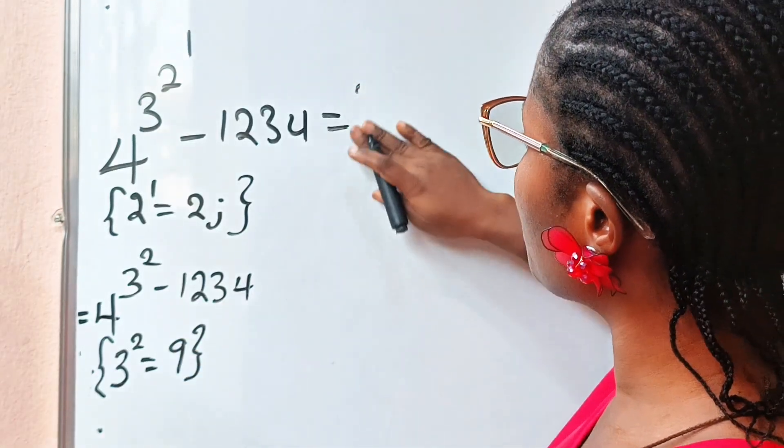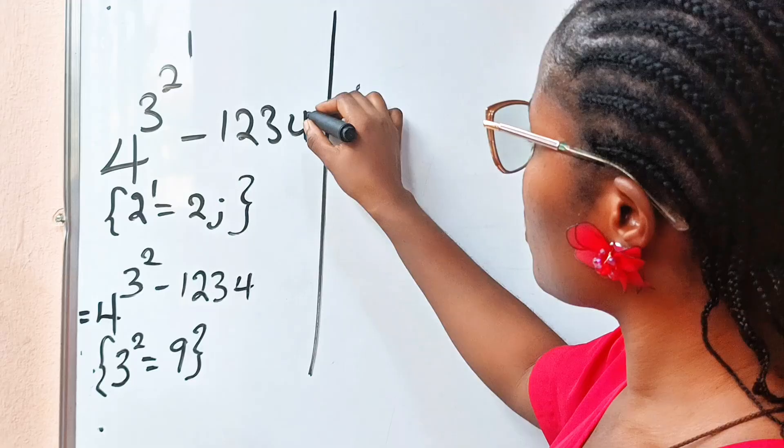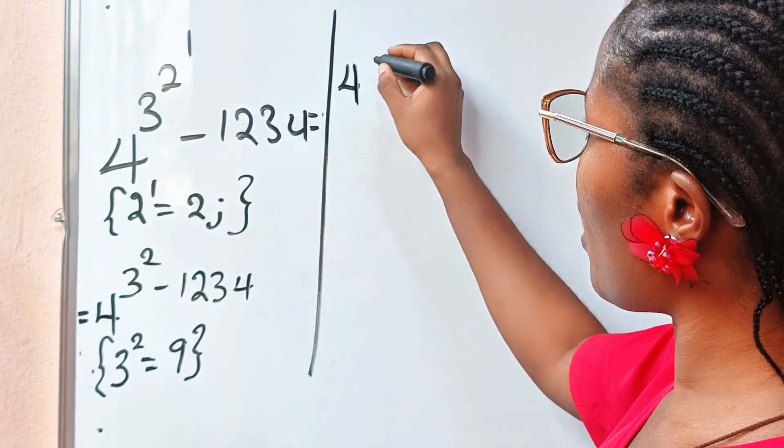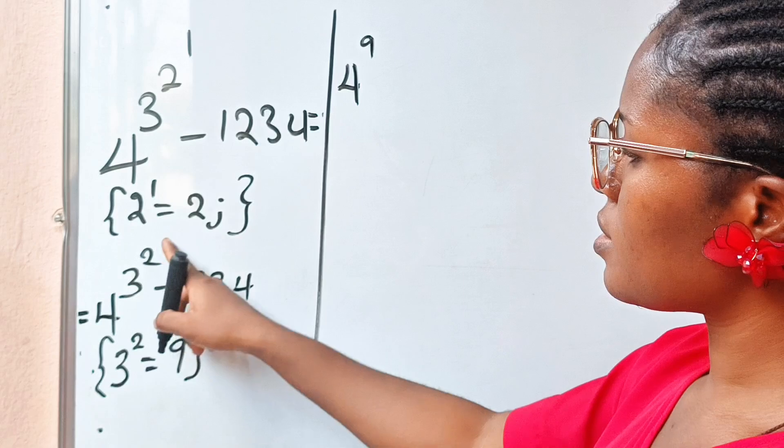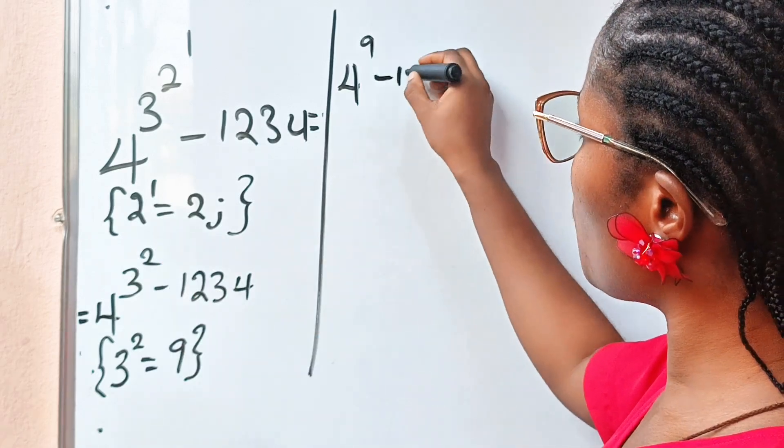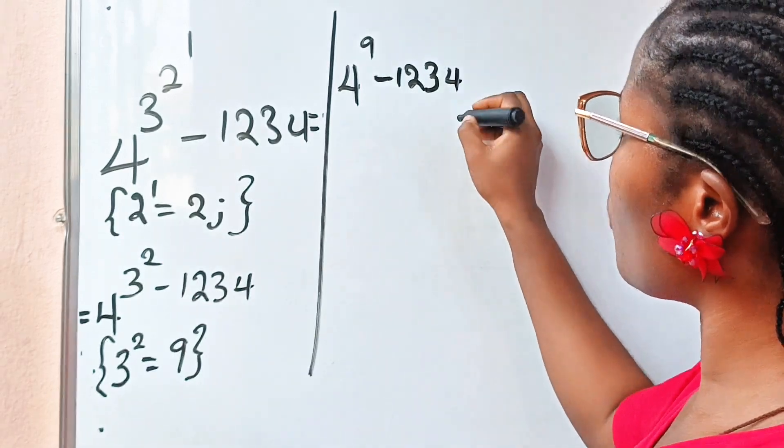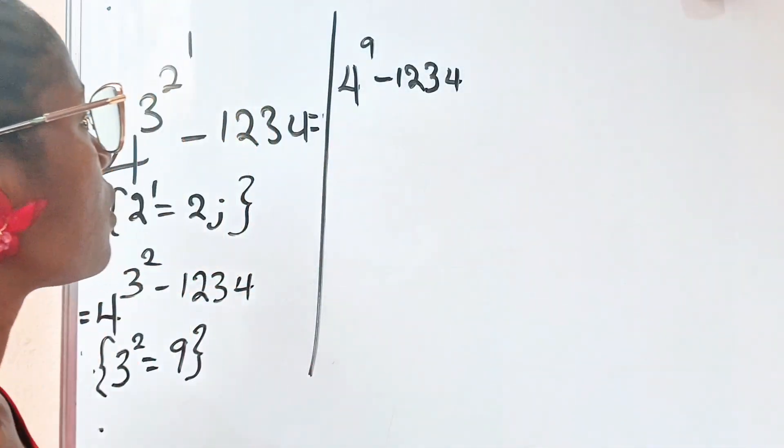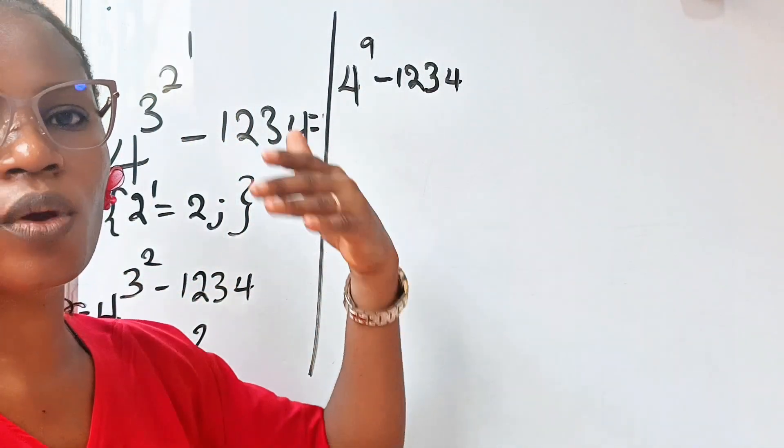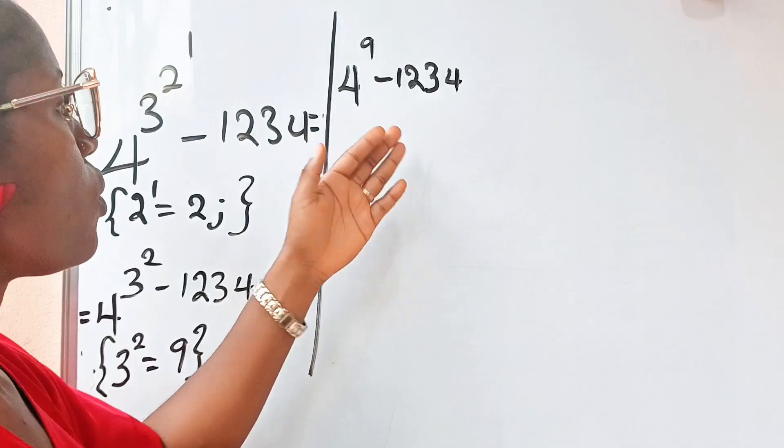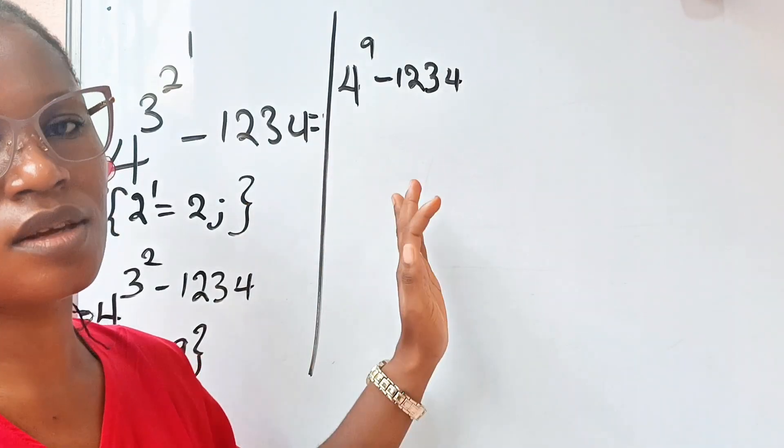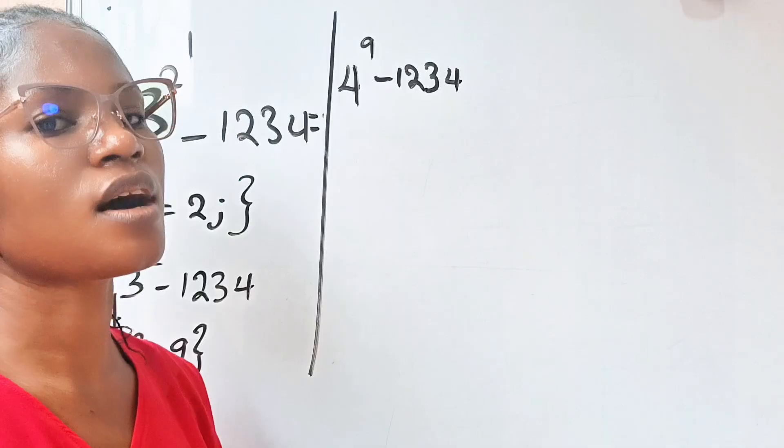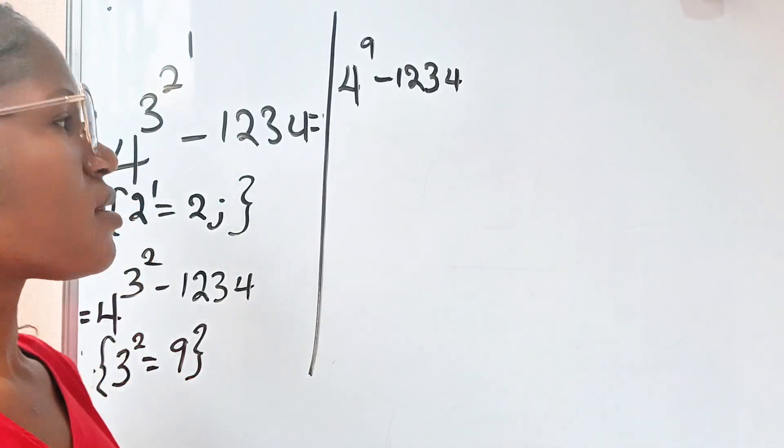And this turns our equation to 4 to the power of 9 minus 1234. Now, the equation says we should not use calculator. That means that we will be simplifying these things in such a way that we don't need calculator to get our solution.